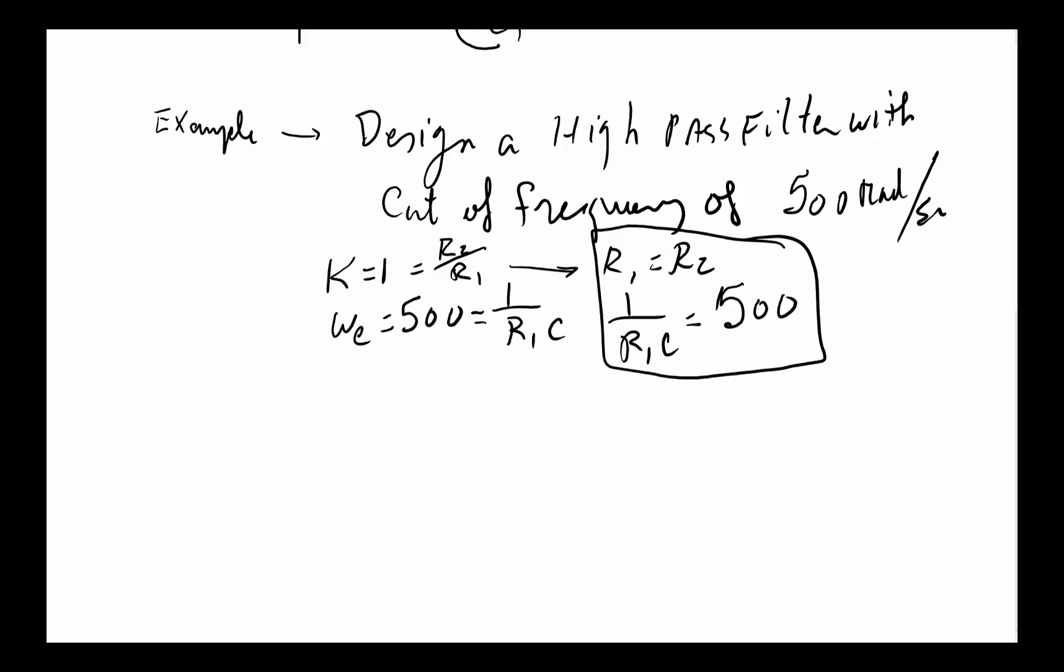We've got these two equations, and to design this we have to decide what is R1, R2, and C. Typically the C is much harder to find the exact value for, so let's go ahead and assume C equals 1 microfarad because we have lots of those available in the lab, or maybe it's the cheapest device we can get.